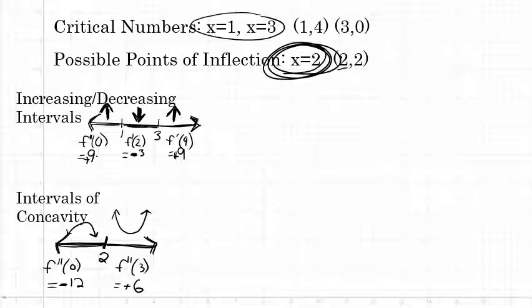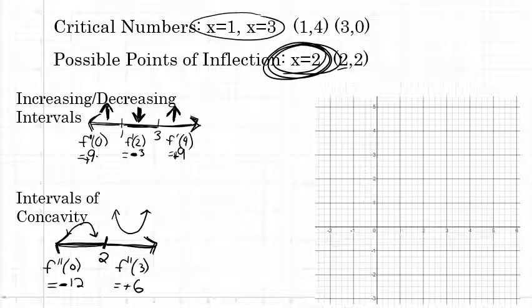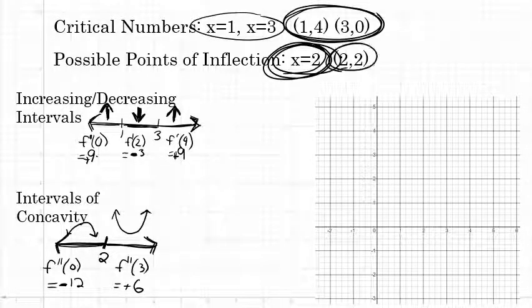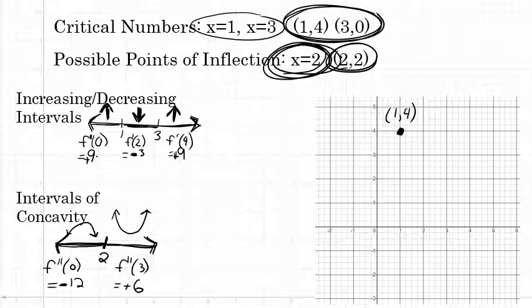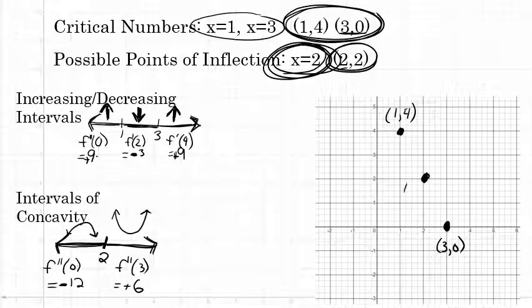Now that I know where the graph is increasing and decreasing and where the graph is concave up and concave down, I have enough information to draw the graph. The first thing I'll do is plot the associated ordered pairs for the critical numbers and the possible point of inflection. The critical number x = 1 gives point (1, 4); x = 3 gives point (3, 0); and the possible point of inflection x = 2 gives point (2, 2).